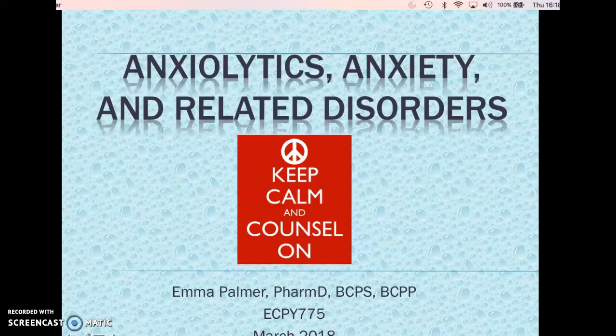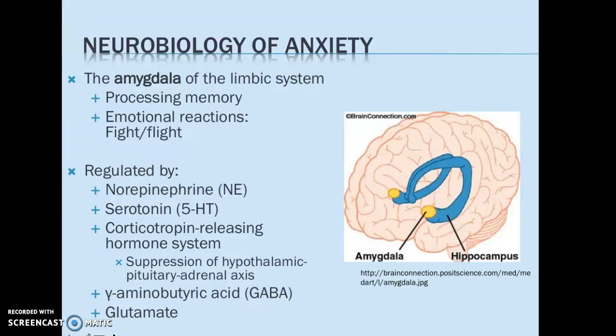Now we're going to talk about the pathophysiology of anxiety. Anxiety is associated with a number of different structures within the brain that are affected when someone has experienced something that makes them anxious. One of the biggest structures that we think about is the amygdala, which is located in the limbic system and is responsible for memory processing. This is really where we get the processing of those emotional reactions associated with the fight-or-flight response.